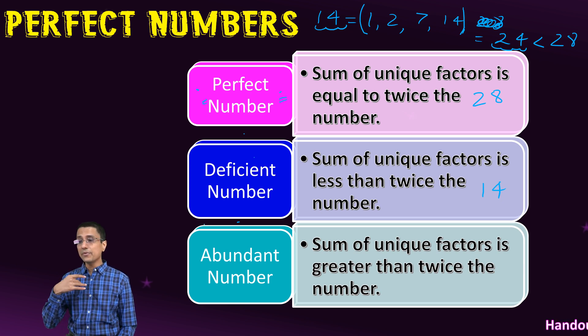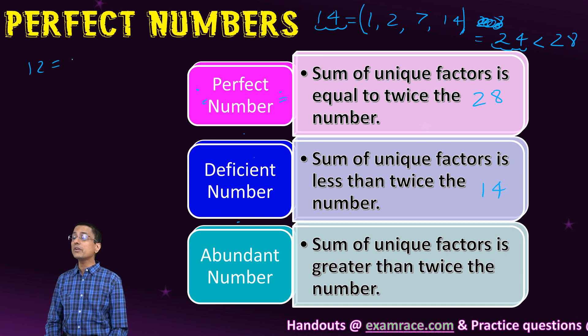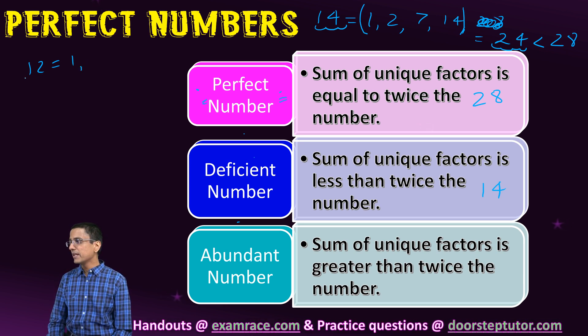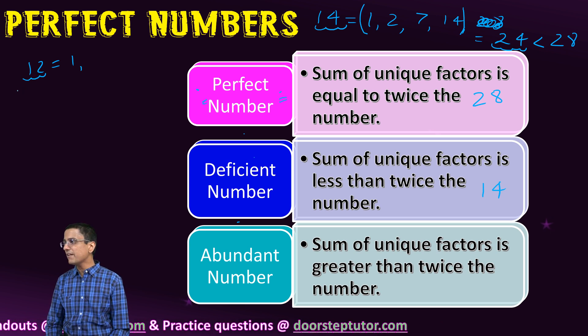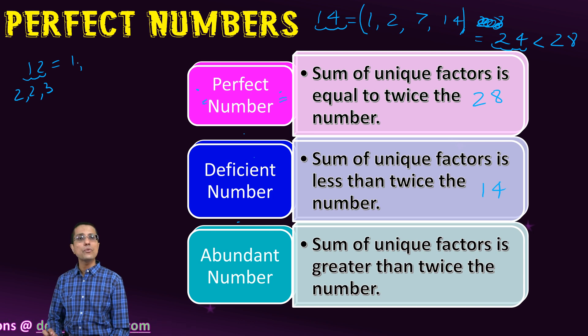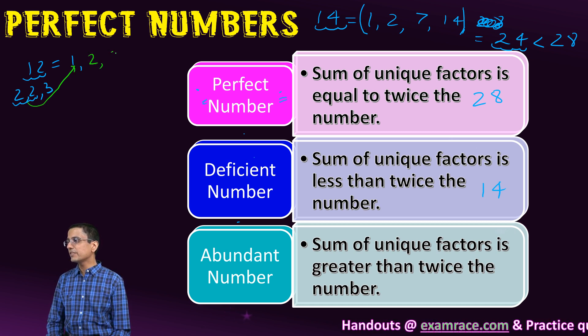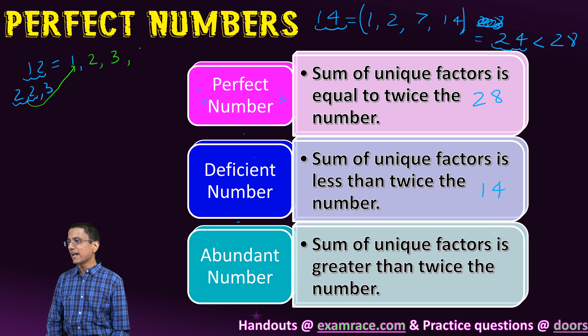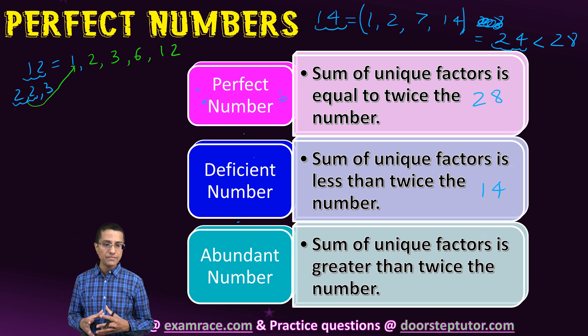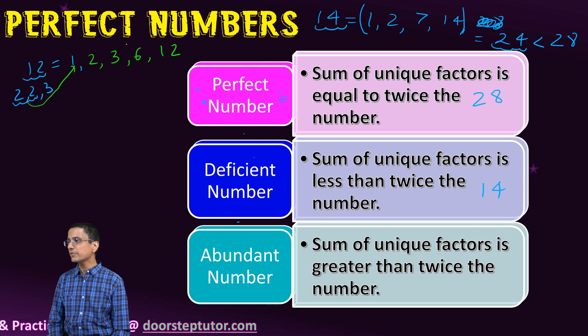Let's take an example of an abundant number, which is our favorite number 12. Again we list down all its factors. In case of 12, if I write down the prime factorization it would be 2 to the power 3, but here we're listing only unique factors. From these two 2's I'll pick one 2, then 3, then 4, then 6, and then 12 itself.